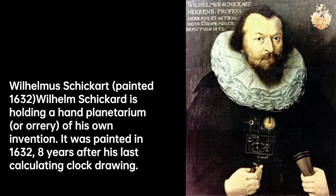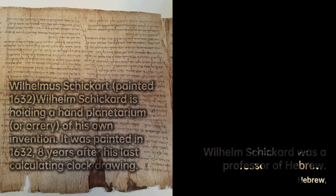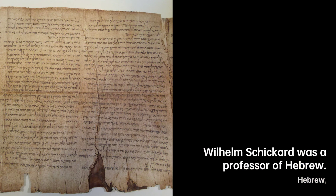Excited about his invention, Schickert commissioned clockmaker Johann Pfister to build a finished machine. However, tragedy struck when a fire destroyed the machine before its completion or delivery. Devastated by this setback, Schickert eventually abandoned the project.